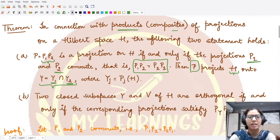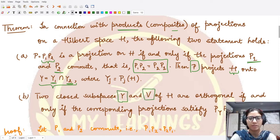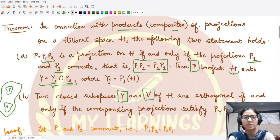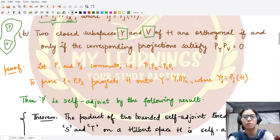The second point tells us that whenever we have two closed subspaces - one is Y subspace, one is V subspace - if we have Y as some closed subspace and V as some closed subspace of this Hilbert space, then both of these spaces would be orthogonal to each other whenever...